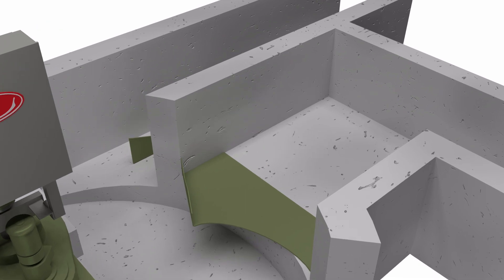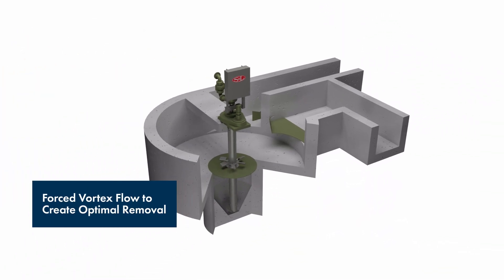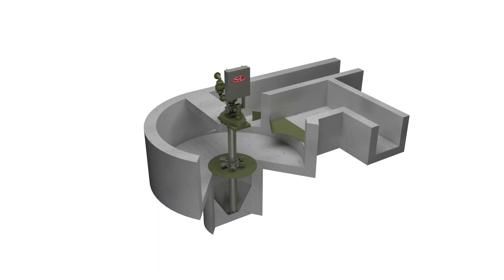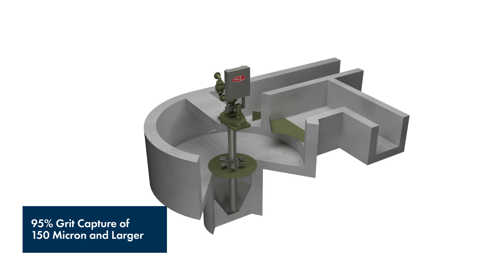It directs the inlet flow creating a forced vortex flow that prevents short-circuiting and allows for an extra full rotation through the chamber. This forced vortex action provides grit removal of 95% grit capture of 150 micron grit and larger.